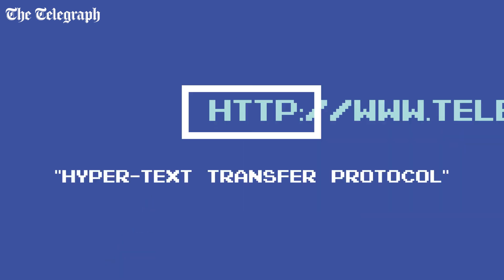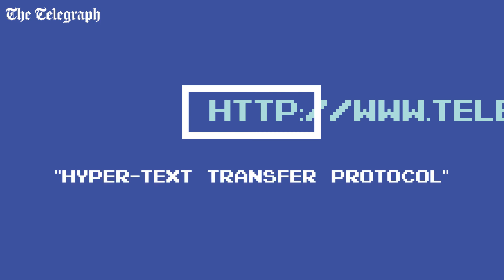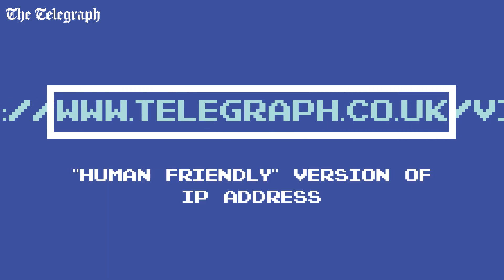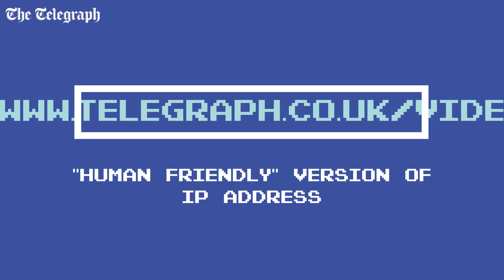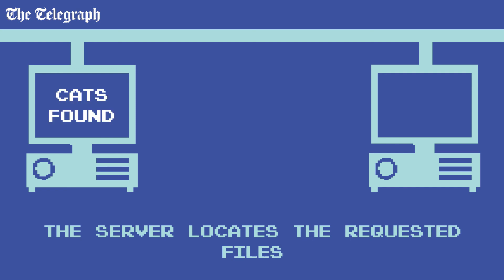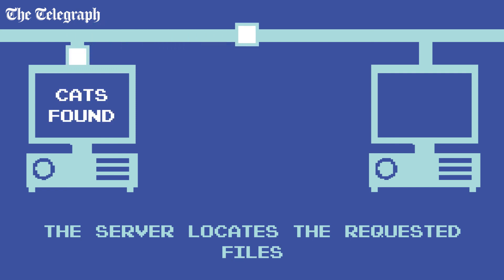HTTP identifies that the machines will talk using an etiquette called Hypertext Transfer Protocol. The domain name is the human-friendly code attached to a numerical IP address. The rest of the code identifies where the file requested is on the server. The server uses this information to locate the files and sends them back to your computer via the internet using TCP/IP.